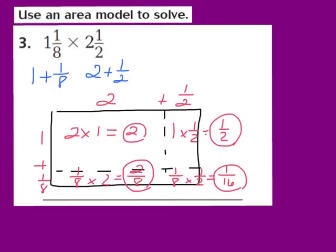Now our last step is to add all of those areas together: the 2, the 1/2, the 2/8, and the 1/16. Starting with the fraction parts — 1/2, 2/8, and 1/16 — the problem is they don't have a common denominator. I'm looking at denominators 2, 8, and 16, and 16 makes a great common denominator because 16 is a multiple of 2, 8, and 16.